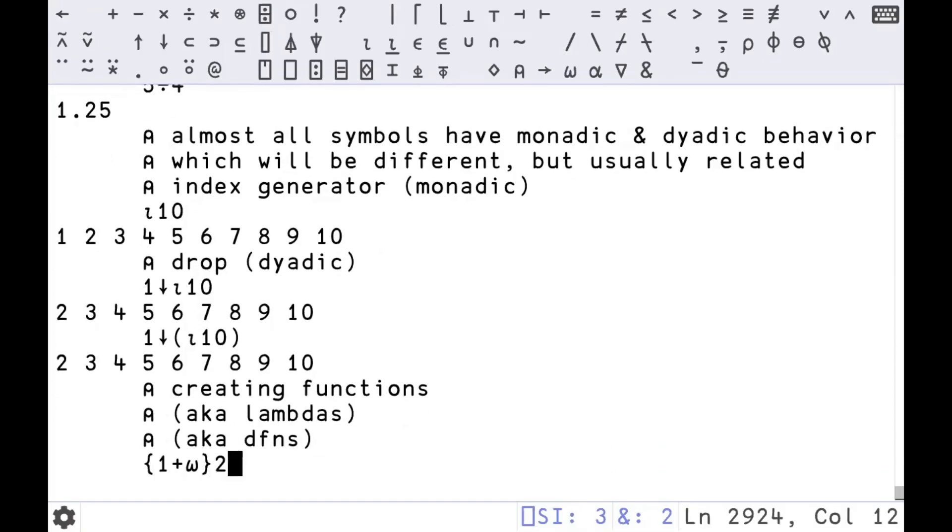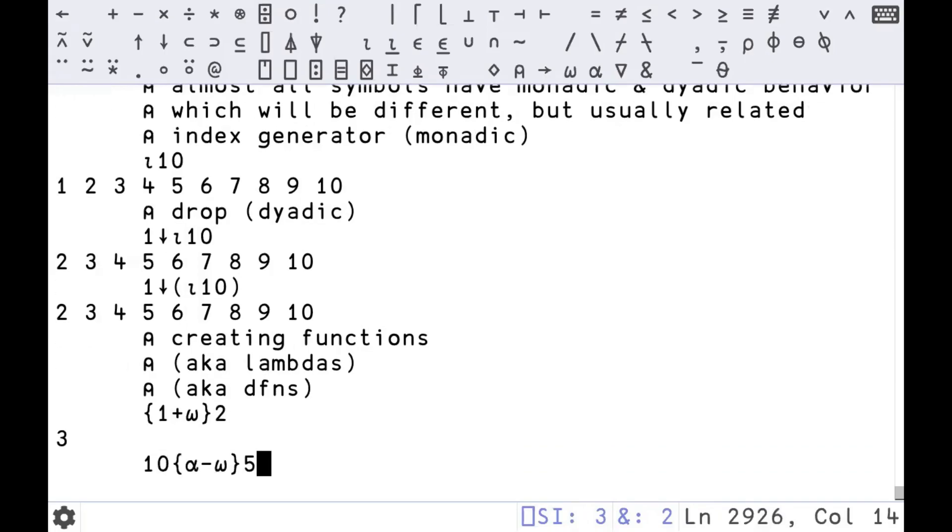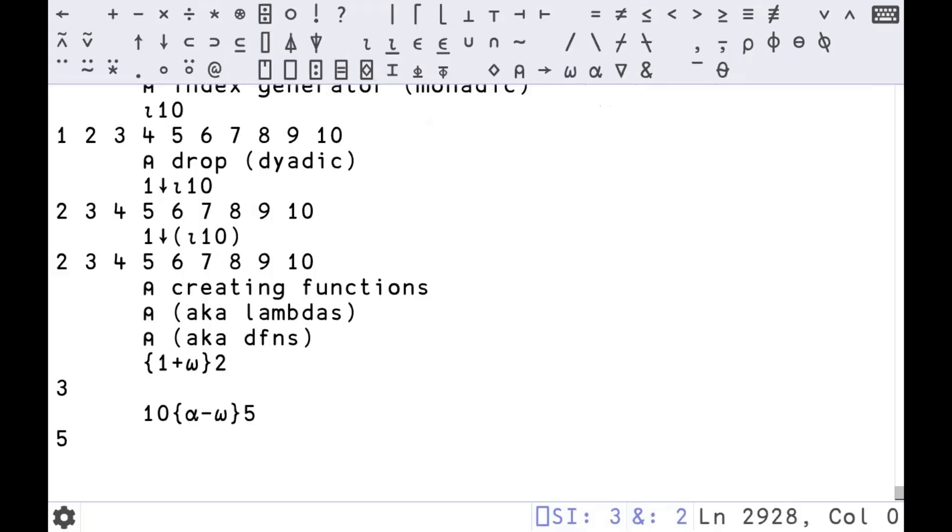There's anonymous functions or lambdas or dfuns as APL calls them. This syntax is called dfuns. Here's a function that takes one argument. It's a monadic function. The symbol you use for the argument to a monadic function is omega. So this is a function that takes a number, two, adds one to it, and returns it. The plus is addition, by the way. Three. Here we are creating a dyadic function. When you're creating a dyadic function, the symbol for the left value is alpha. So we have a function alpha minus omega. This makes 10 minus 5, which is 5.